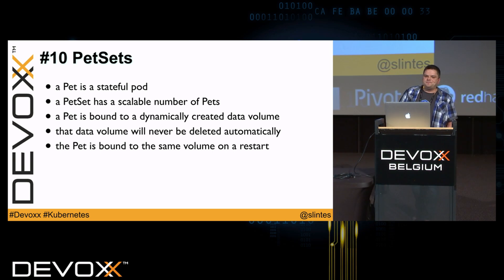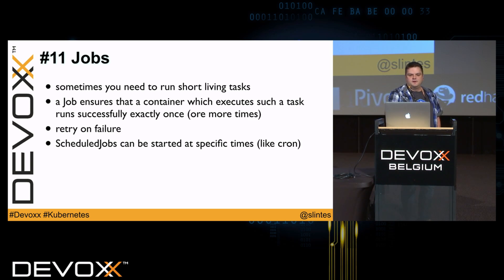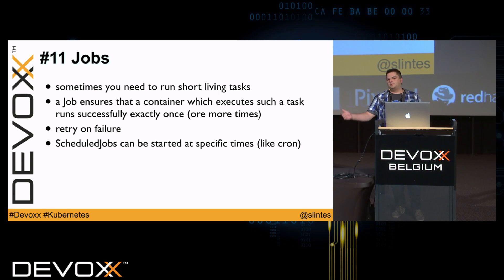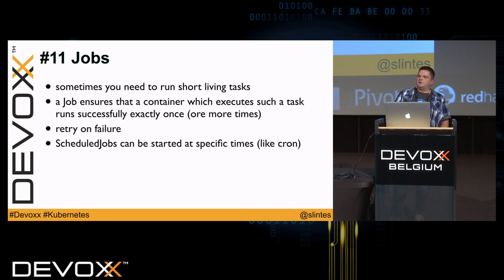Sometimes you want to run short-running tasks. For this, Kubernetes has jobs. Jobs run a container once in your cluster — or a configurable number of times — and Kubernetes ensures the pod runs at least once successfully, restarting it on another node if needed. You can also use scheduled jobs, which are like cron jobs, where pods are started at configurable times.